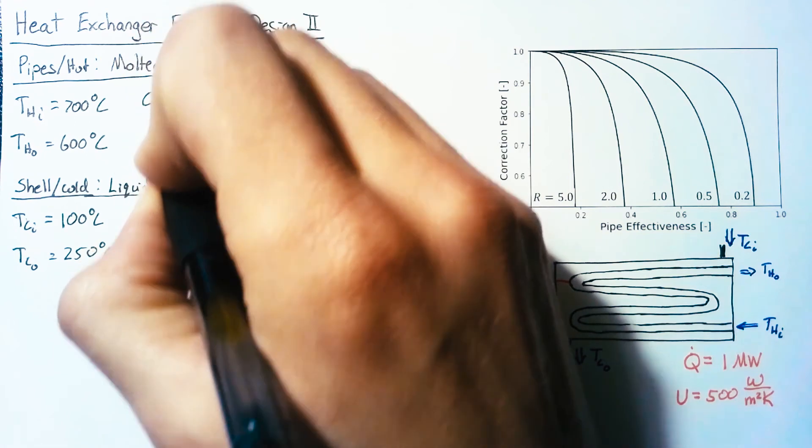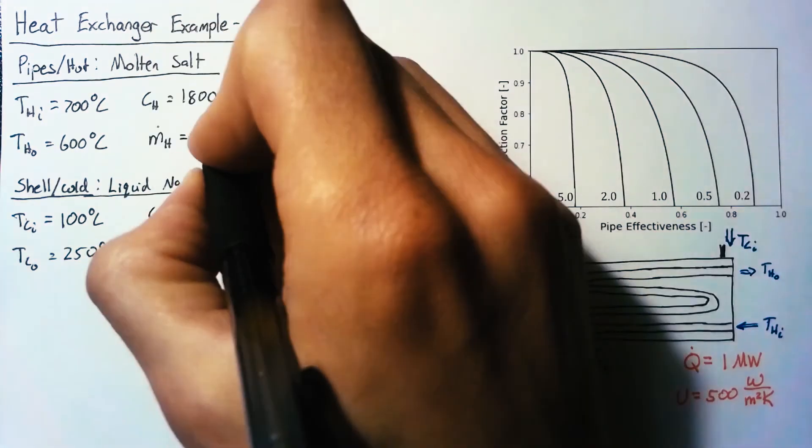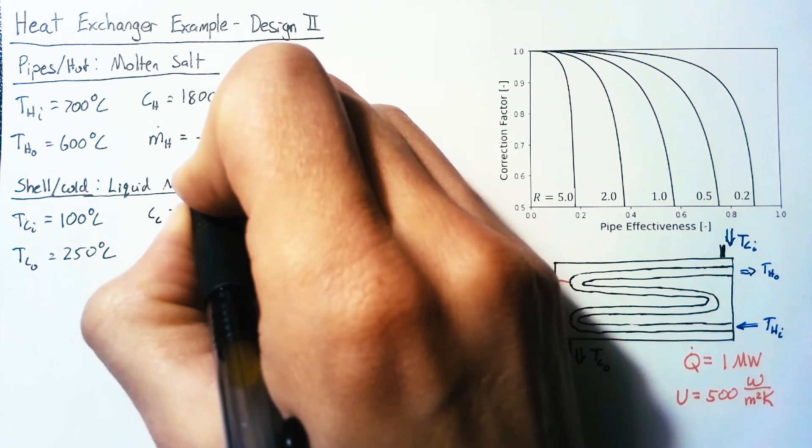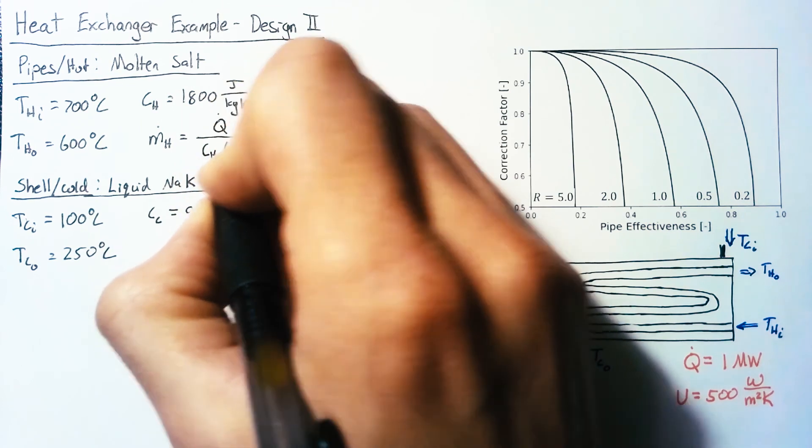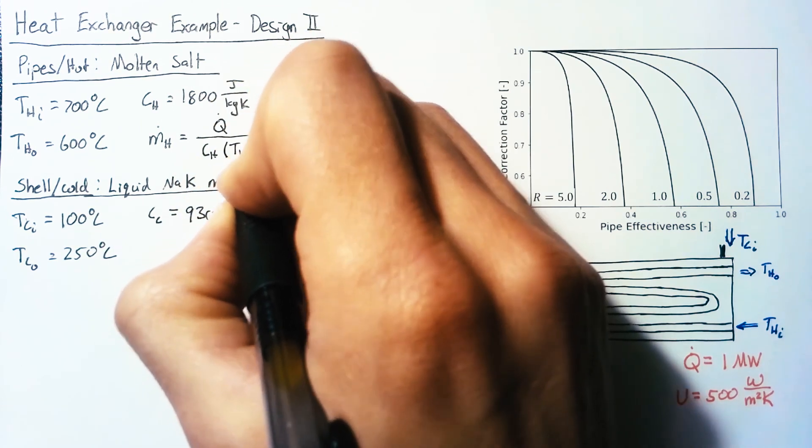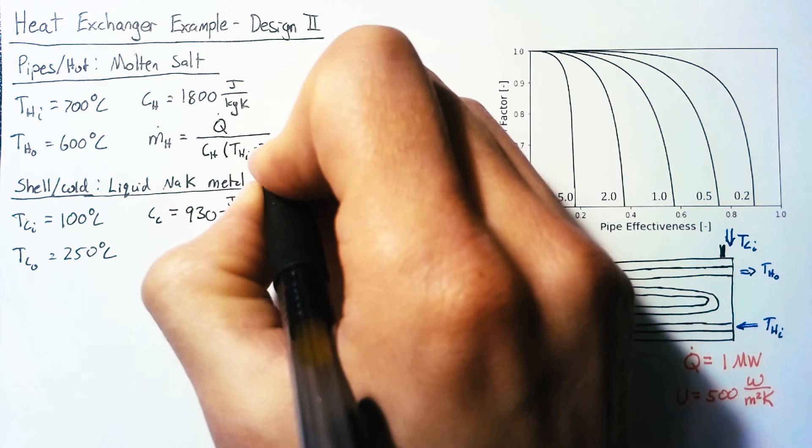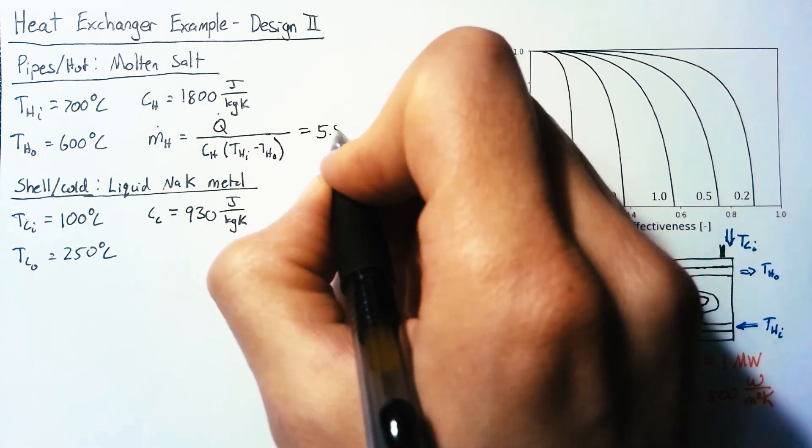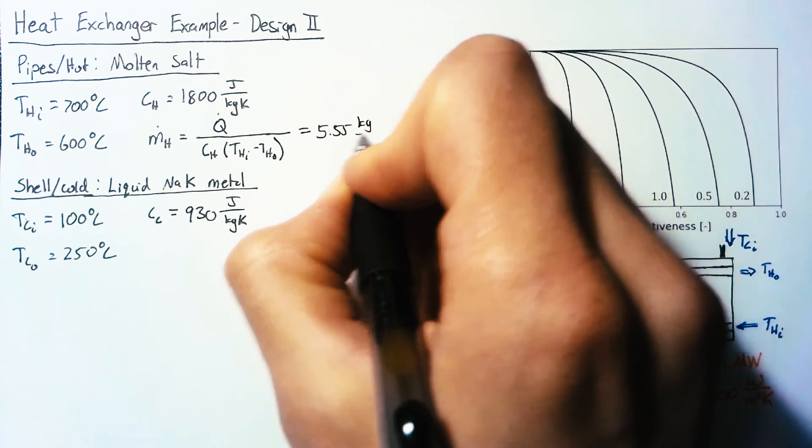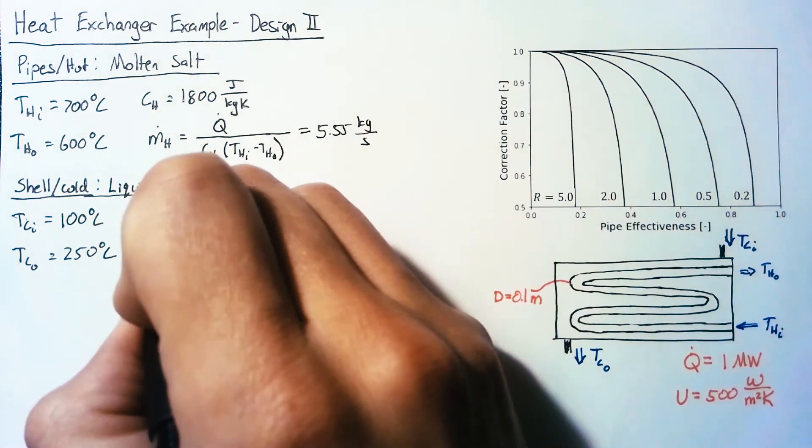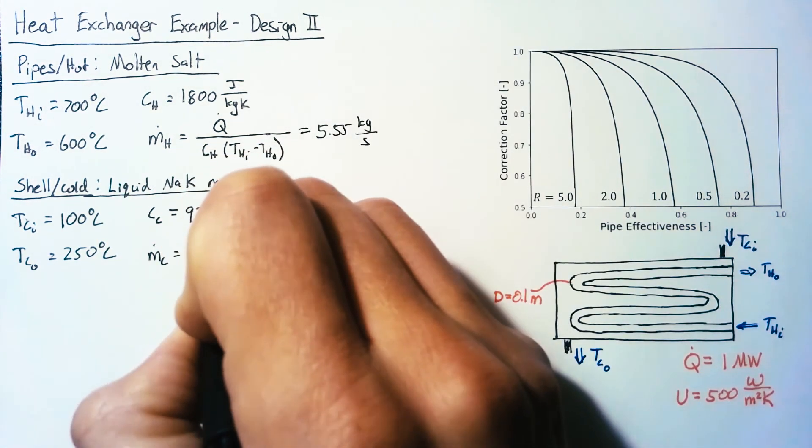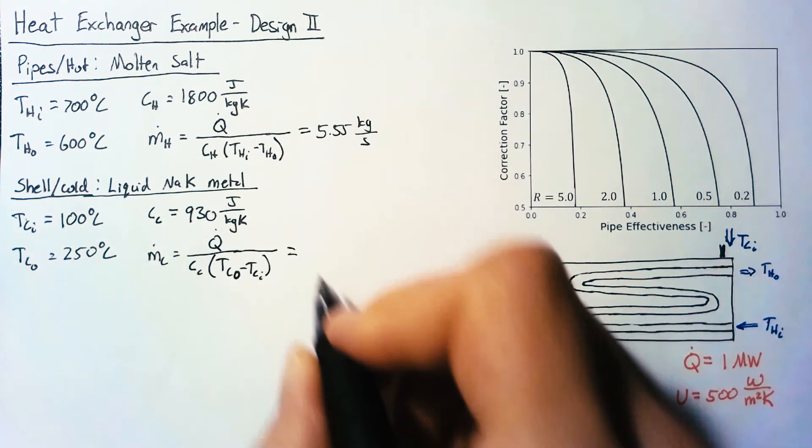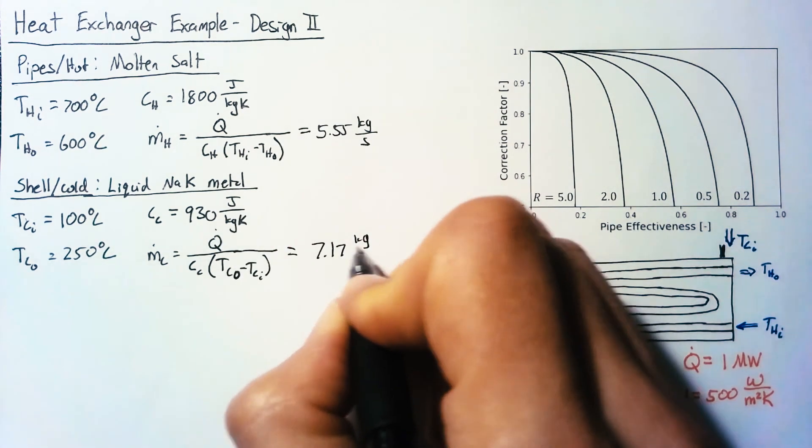So let's start off by finding our m dot values. m dot is just going to be our total heat transfer rate divided by our CH multiplied by our delta T, which is our TH in minus TH out. Plugging in those numbers, we end up with 5.55 kilograms per second. Then we can do the same thing for the cold side. This time, we're going to do TC out minus TC in, and those numbers give us 7.17 kilograms per second.